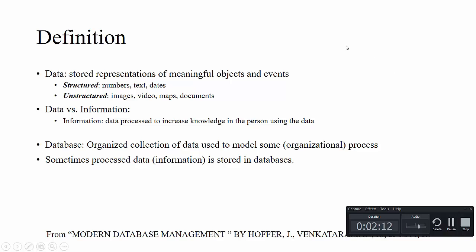Most of the time we distinguish data from information. Data becomes information when you perform some manipulation on it. For example, if you have the GPA of several students and you calculate the average, the average is information, while each individual GPA is data.